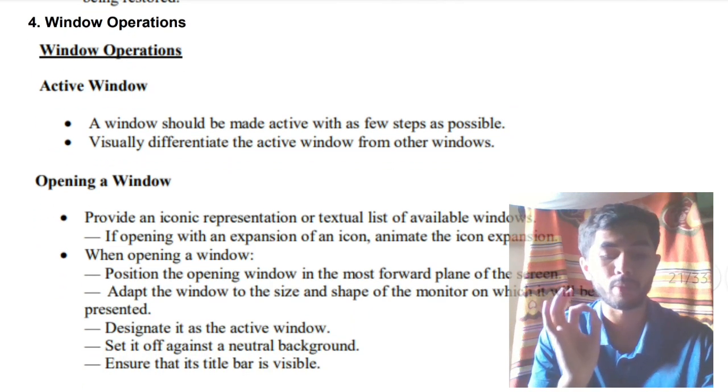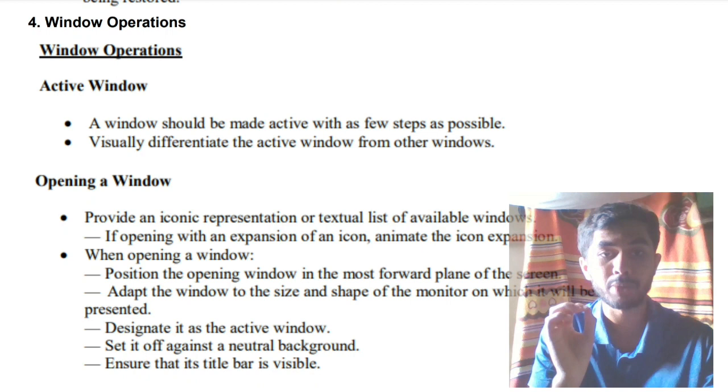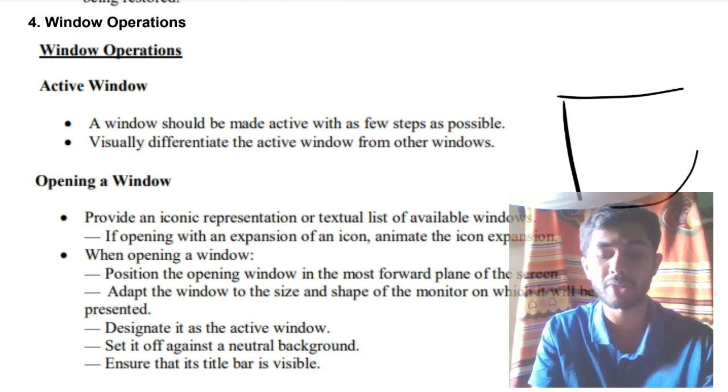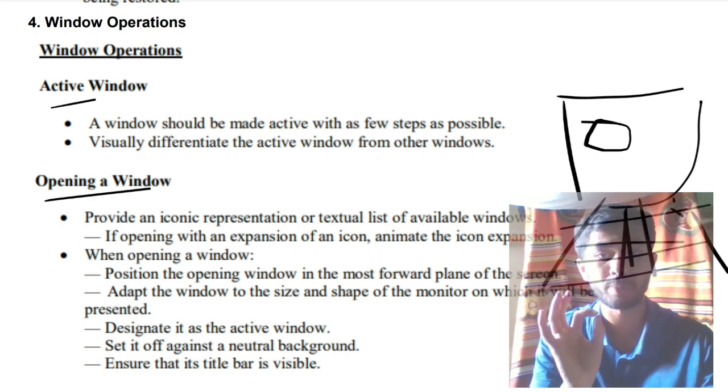Moving on we have the windows operations. Windows operation you need to apply some of your brain and common sense. Why? Because what happens, first when you open your laptop screen you will be having many icons here which can access it. So what you will be doing is first you will be activating any icon you'll be clicking. So what will happen, you'll activate that window. So that's the first one, activation of the window. Second one is opening a window. You'll be opening that and whatever you will be doing, if it is open, where it should be present? It should not be present in the corner, it should be present in the middle screen.